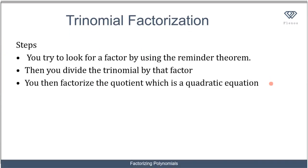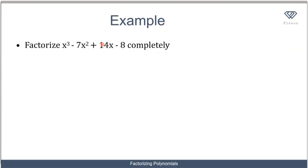Now let's talk about trinomial factorization where you have x to the power of 3. The procedure is: first find a factor using the factor theorem, then divide the polynomial by that factor, and then factorize the quotient, which will be a quadratic equation.